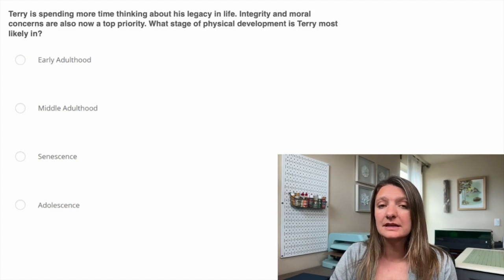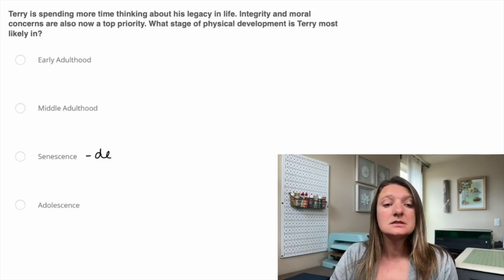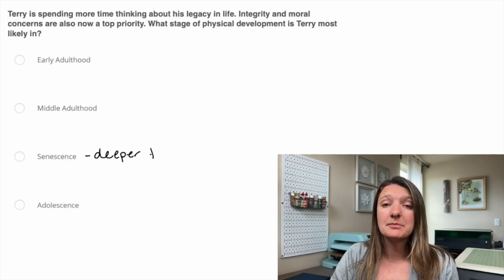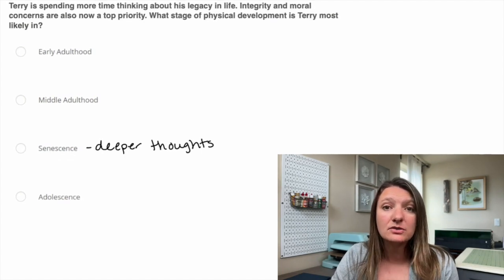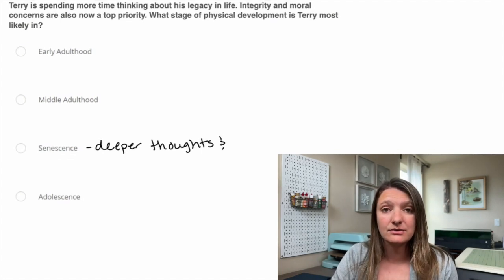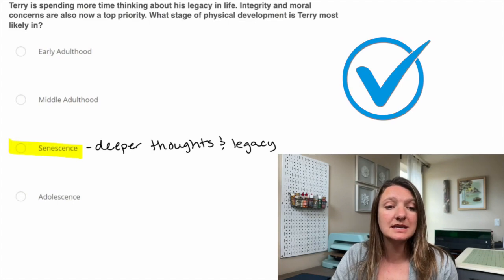This is really the definition of what senescence is. Senescence by definition is when you're going to have those deeper thoughts and you're going to be thinking about your legacy in life. So Terry is going to be in that senescence phase. Our answer is going to be C, senescence.